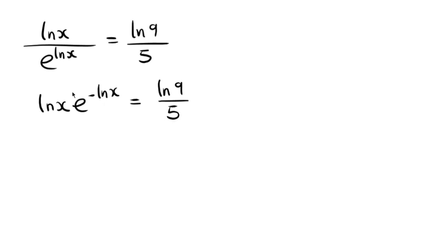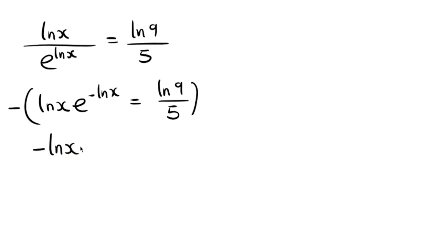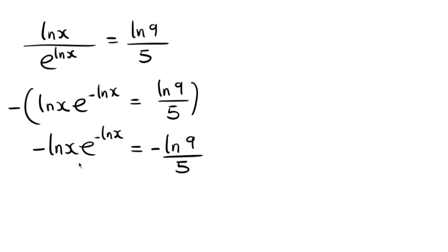I notice the power is −ln(x) but the base expression needs to match the Lambert W form. To achieve this, I multiply through by negative on both sides. On the left I get −ln(x) · e^(−ln(x)), and on the right I get −ln(9)/5.